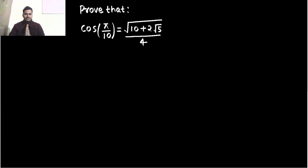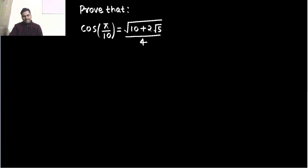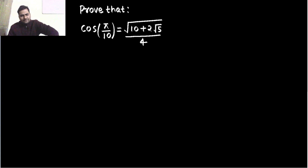Hello everyone, Namaskar. Raj Krishna this side and today we are going to solve one more problem from trigonometry. Today we have to find the value of cos pi by 10. This is in radians; if you want in degrees then we are going to find the value of cos 18 degree.